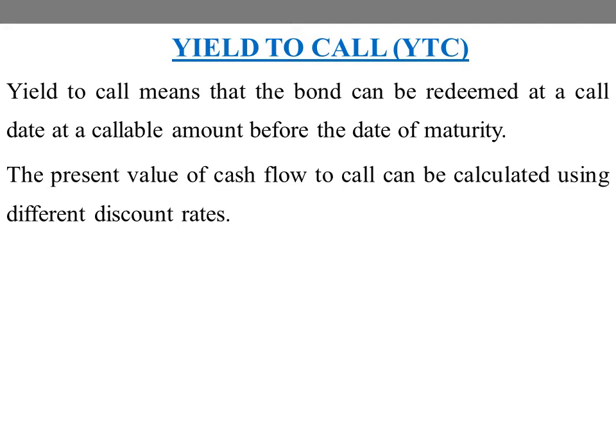In yield to maturity, the maturity period is the only period the investor holds the bond. That is why we call it the holding period return — yield to maturity. Yield to call, on the other hand, is not based on the maturity period.